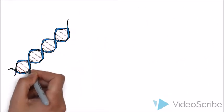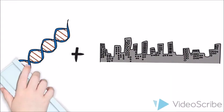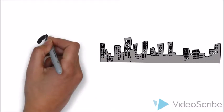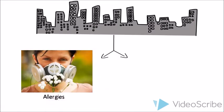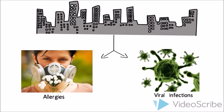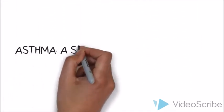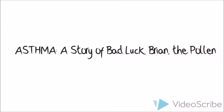So what can trigger such a reaction? Asthma is thought to be caused by genetic and environmental factors. While the genetic mechanism of asthma is not well established, two environmental factors that can trigger asthma are allergies and viral infections, leading to airway inflammation. Our presentation today will focus on allergy-induced asthma, titled Asthma: A Story of Bad Luck Brian, the Pollen.